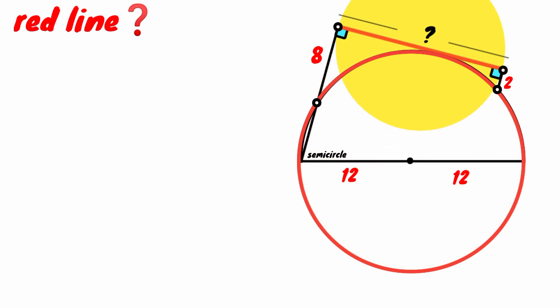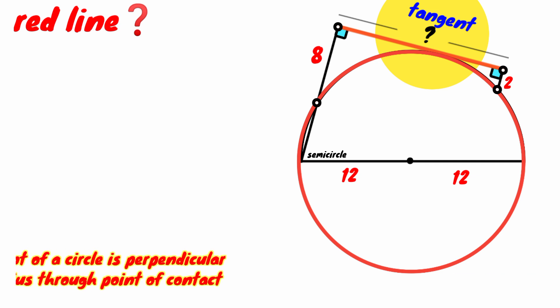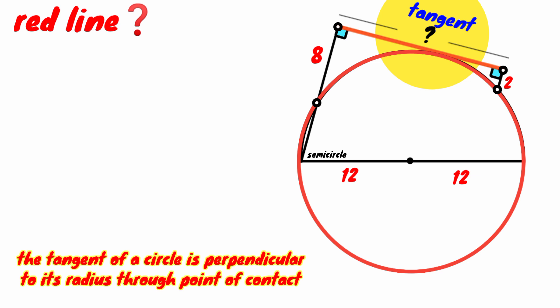We see this red line touches the circle at this point, that is a tangent to the circle. From circle theory there is a rule that the tangent of a circle is perpendicular to its radius through the point of contact. So from this point of contact if we draw the radius of the circle which is 12 units in length, the angle formed will be a right angle.